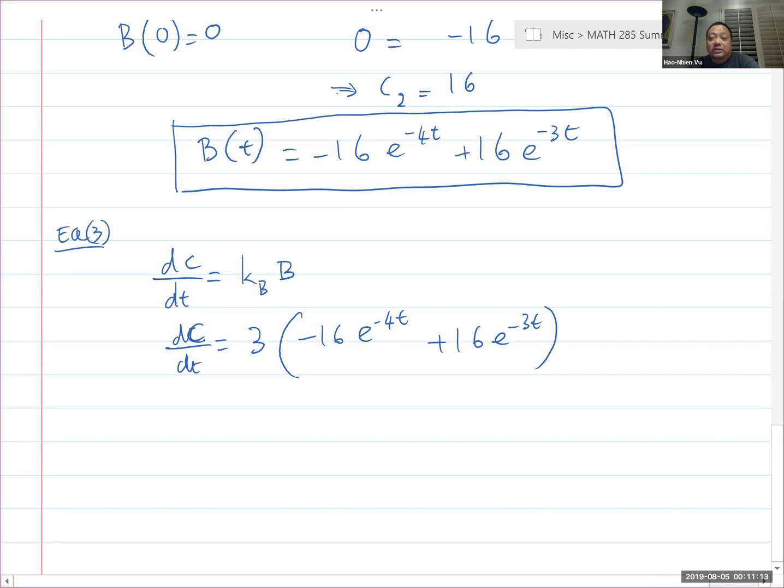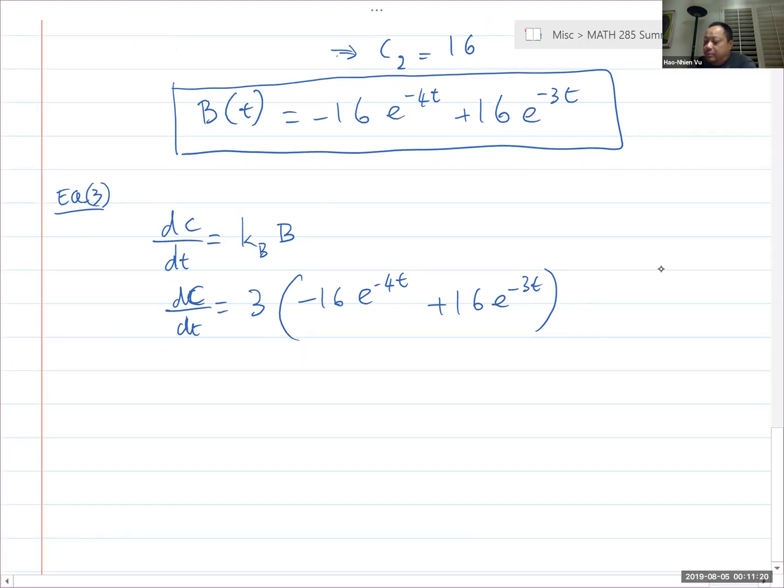Oh wait, that's just t. So I can just integrate both sides. The derivative of C is equal to some function of t. So I'm going to integrate both sides. Get C is equal to 3 times negative 16 divided by negative 4 of e^(-4t) plus 16 divided by negative 3, e^(-3t) plus some constant C_3.